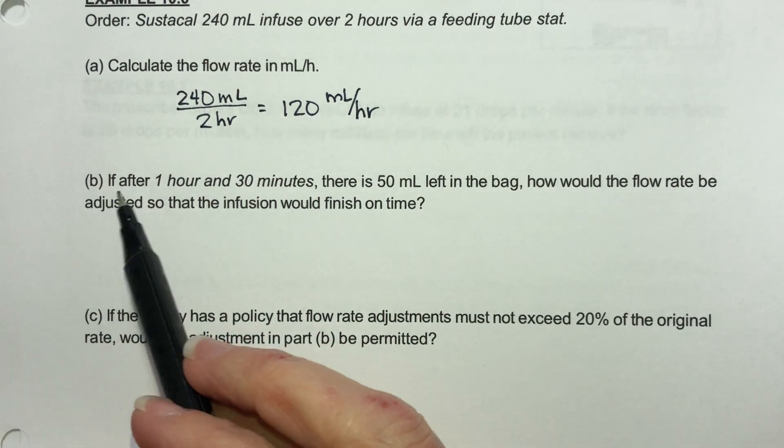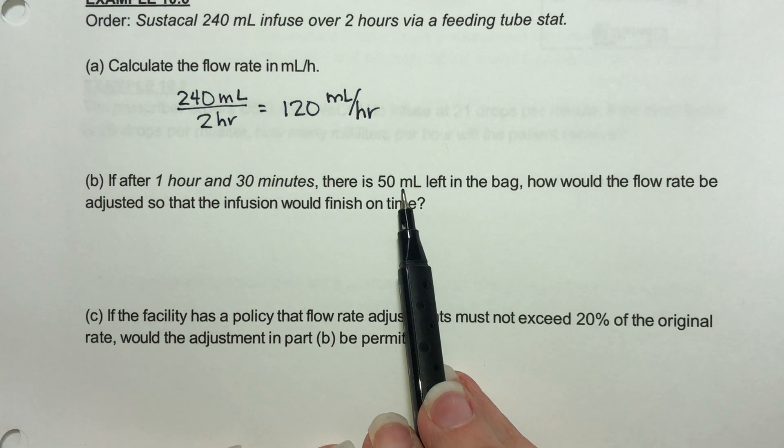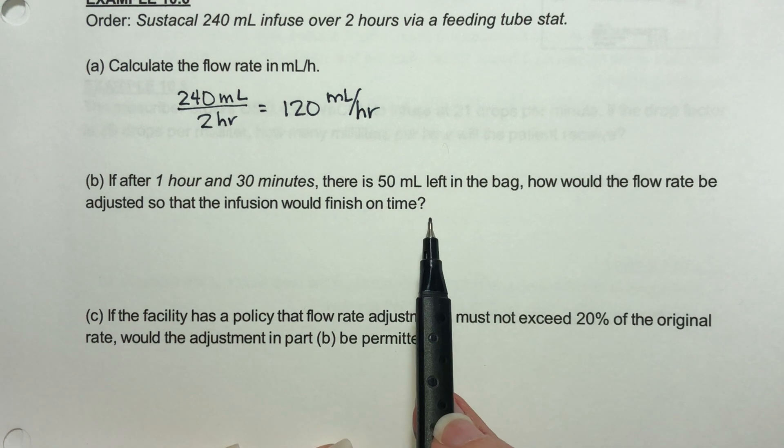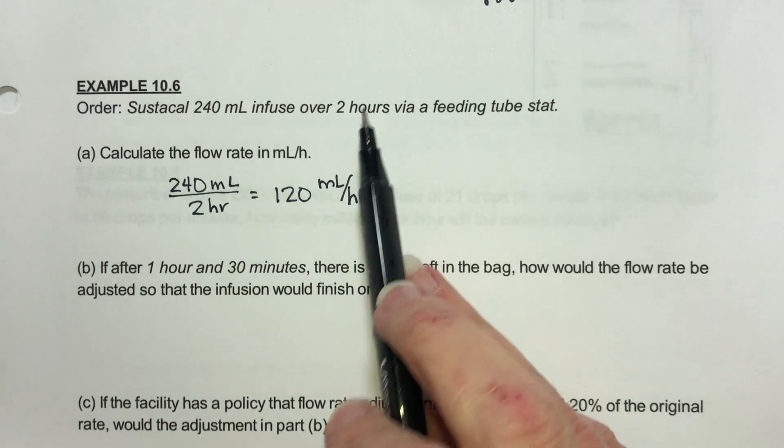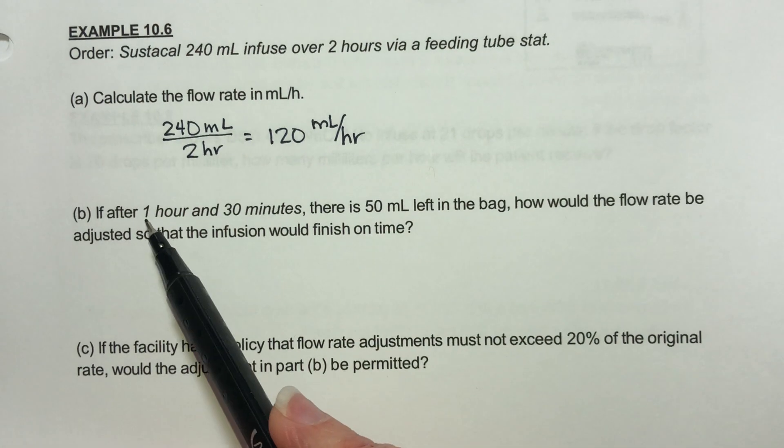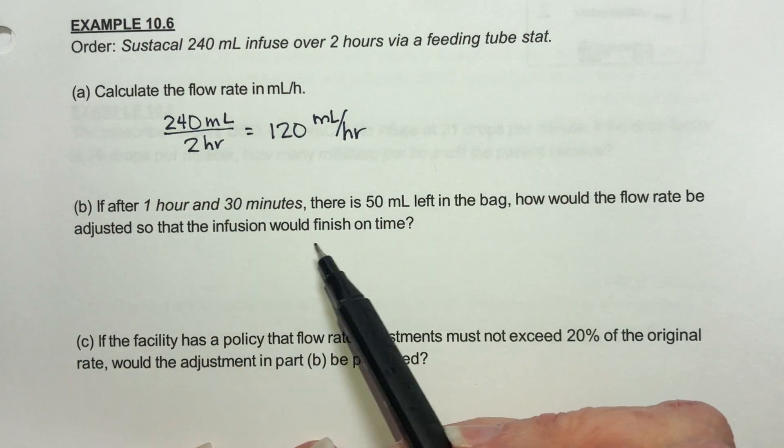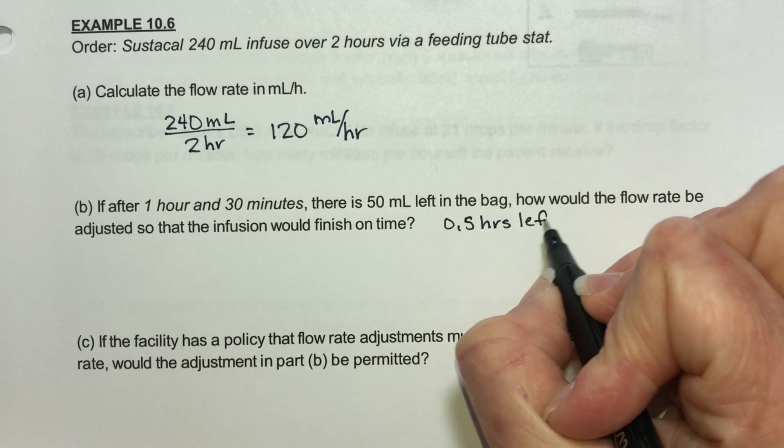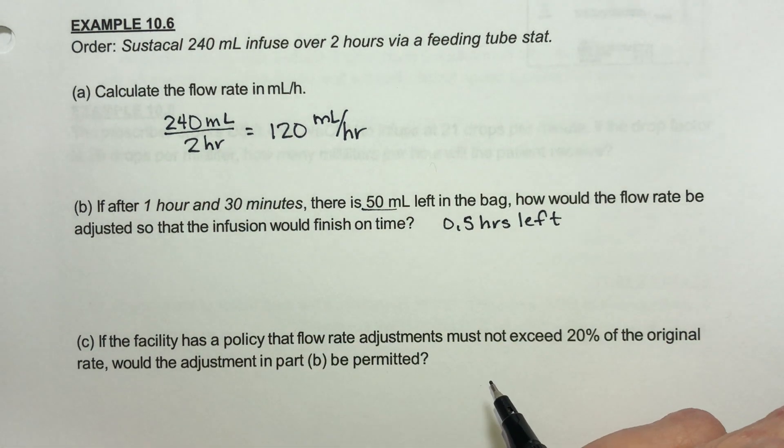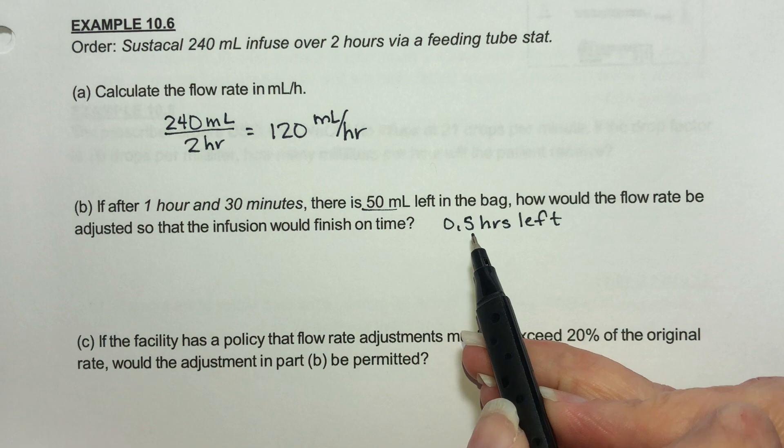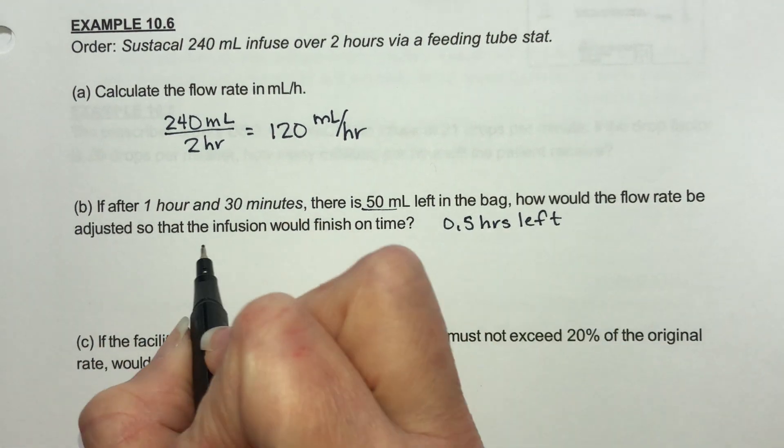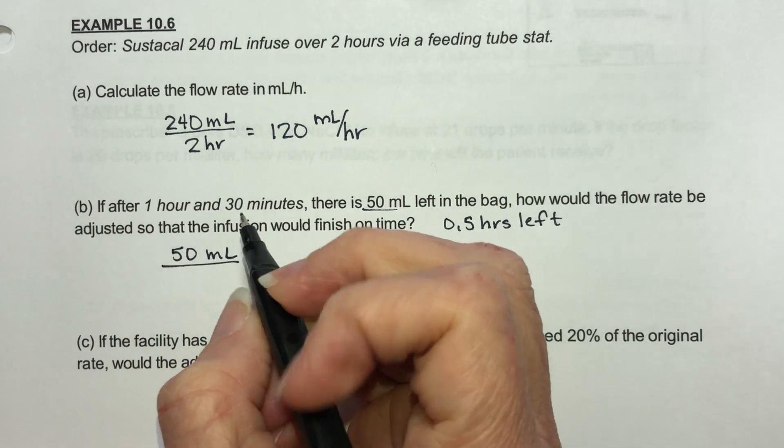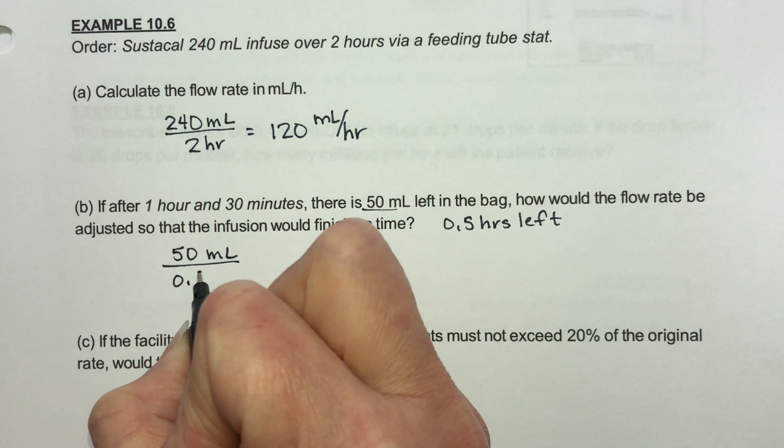Let's say you go in after an hour and 30 minutes and there's still 50 milliliters left in the bag. So how would you adjust the flow rate so that the infusion would finish on time? We had two hours to get this done. We've used an hour and a half, so we only have a half hour left. So we have 0.5 hours left. And we have 50 milliliters left to do volume over time.